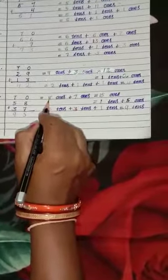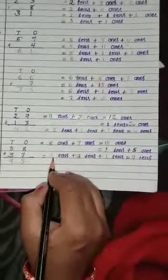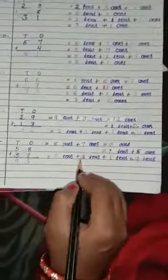Number E: 58 plus 37. We regroup: 8 ones plus 7 ones equal to 15 ones. Regroup 15 ones as 1 ten plus 5 ones. Then 5 tens plus 3 tens plus 1 ten equal to 9 tens. So we find 95.